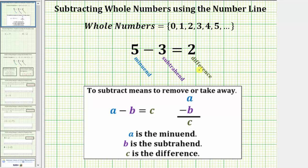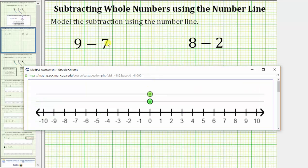And now let's subtract whole numbers using the number line. We will first model nine minus seven using this number line tool. We first model nine by dragging the bottom point nine units to the right of zero to positive nine on the number line.